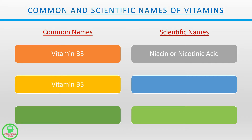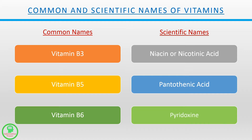Vitamin B5: Pantothenic Acid. Vitamin B6: Pyridoxine.